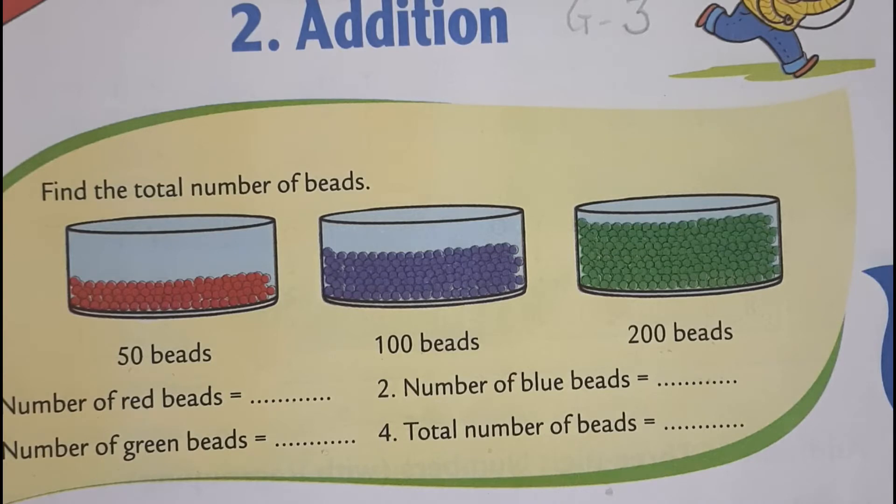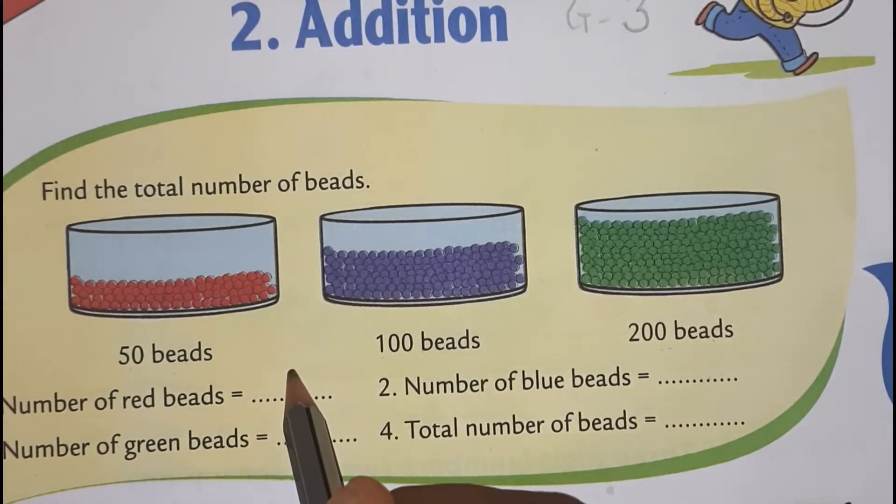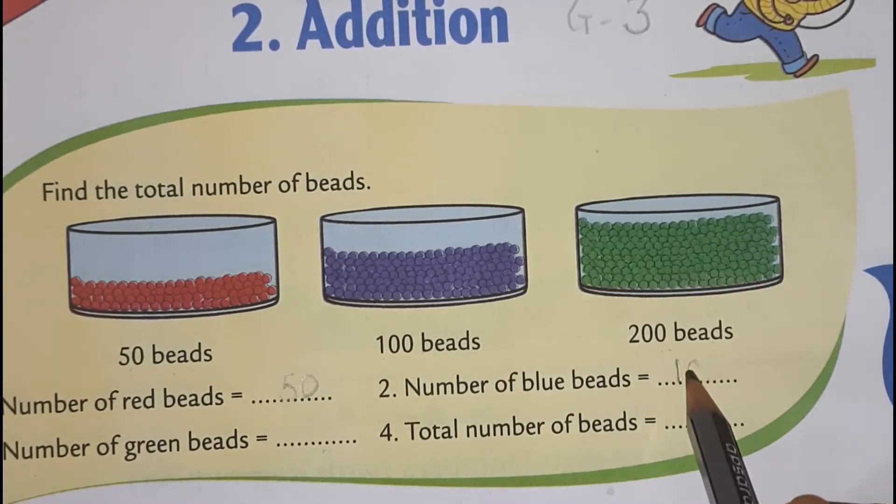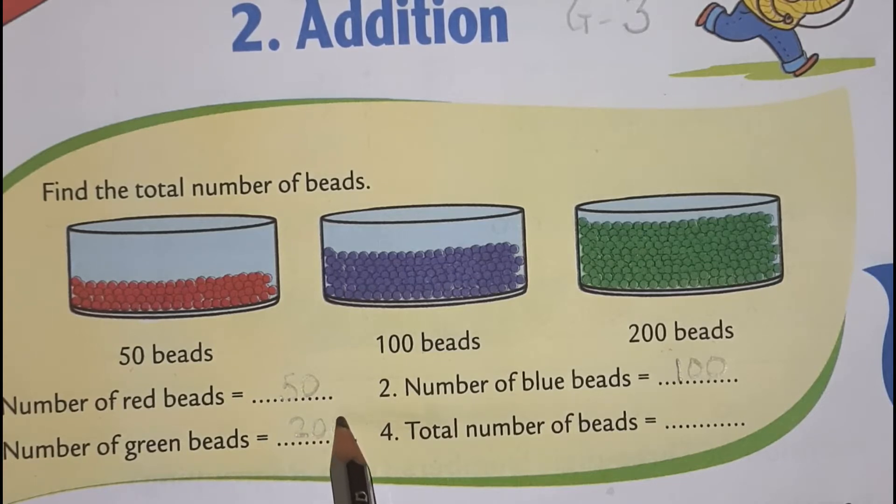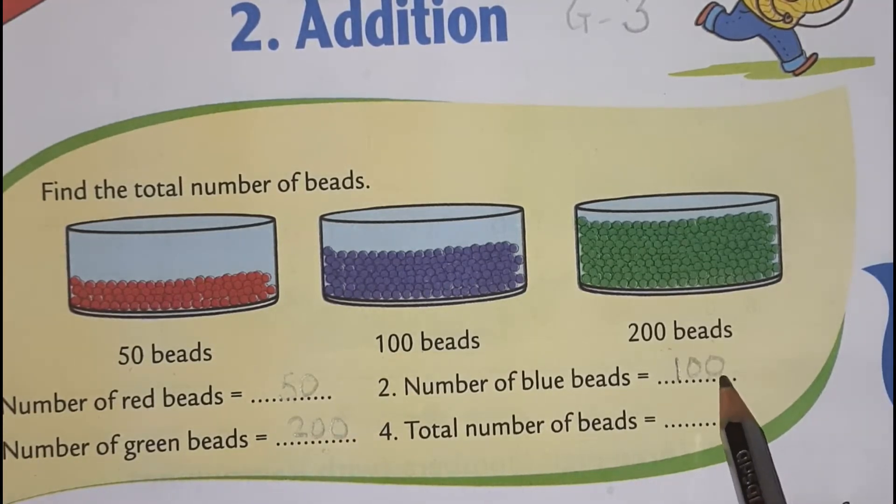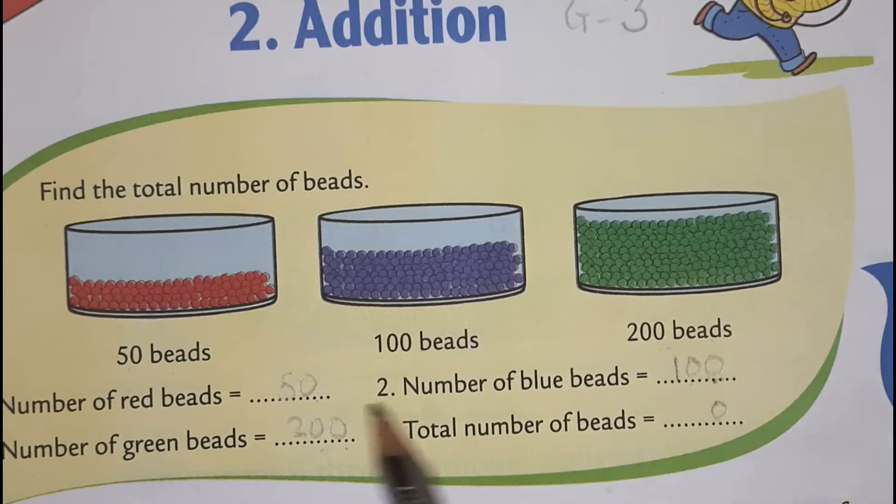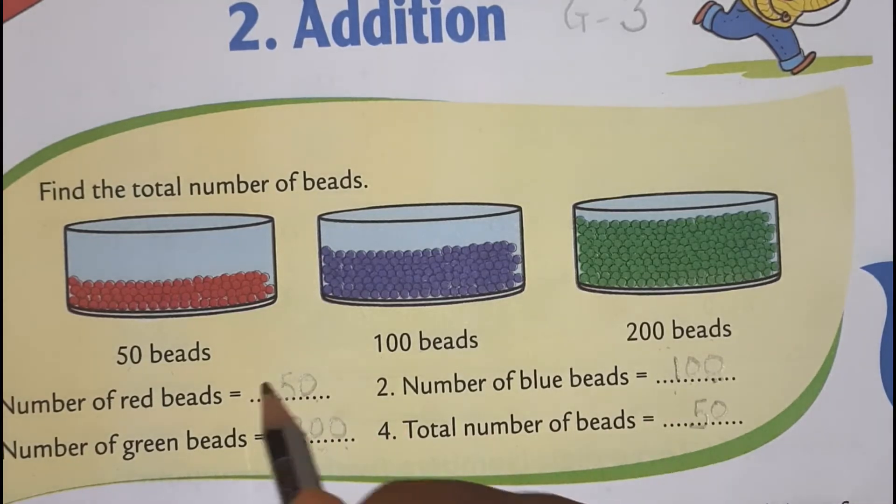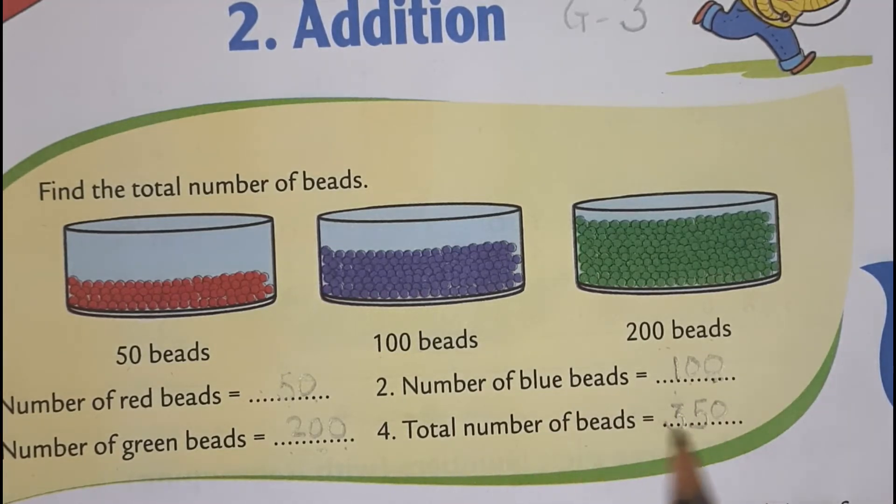Total number of beads. So, what we do? We have to add all the 3 numbers. Here, 50. This is 100. And this is 200. We will add always from the one's place. 0, 0, 0, 0. Then 5, 0, 5. Then 1, nothing, 2. So, 1 plus 2, 3. So, total number of beads are 350.